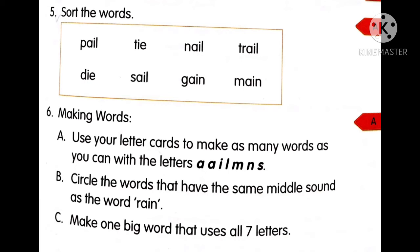Now coming to sixth one: making words. You already know how to make words. In part A, many letters are given — use those letters to frame words. Circle the words that have the same middle sound as the word 'rain,' meaning words with the A-I vowel sound. Also make one big word using all seven letters given.